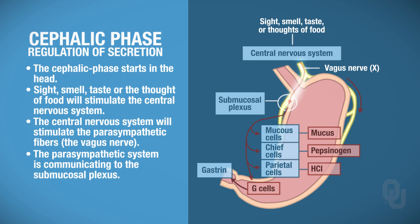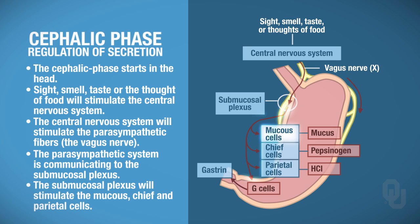The parasympathetic nervous system communicates to the submucosal plexus, which then stimulates the mucus cells to synthesize and secrete mucus. The submucosal plexus will stimulate the chief cells to synthesize and secrete pepsinogen. The submucosal plexus will also stimulate the parietal cells to synthesize and secrete hydrochloric acid, so all of these are now in the lumen.